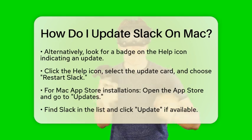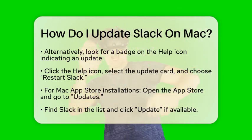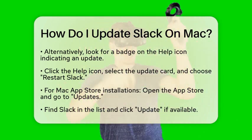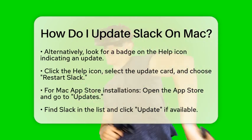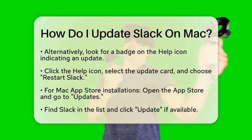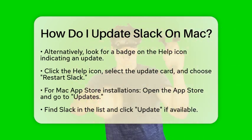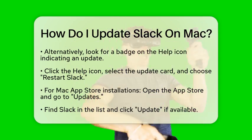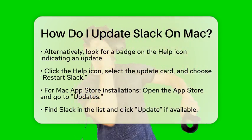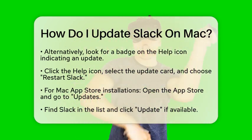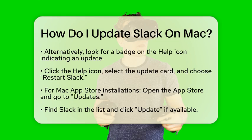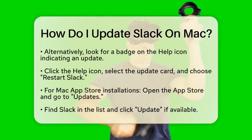Now, if you installed Slack through the Mac App Store, the process is slightly different. Open the App Store on your Mac and click on Updates in the left sidebar. Look for Slack in the list of pending updates — if you see it there, just click Update next to Slack to get the latest version.